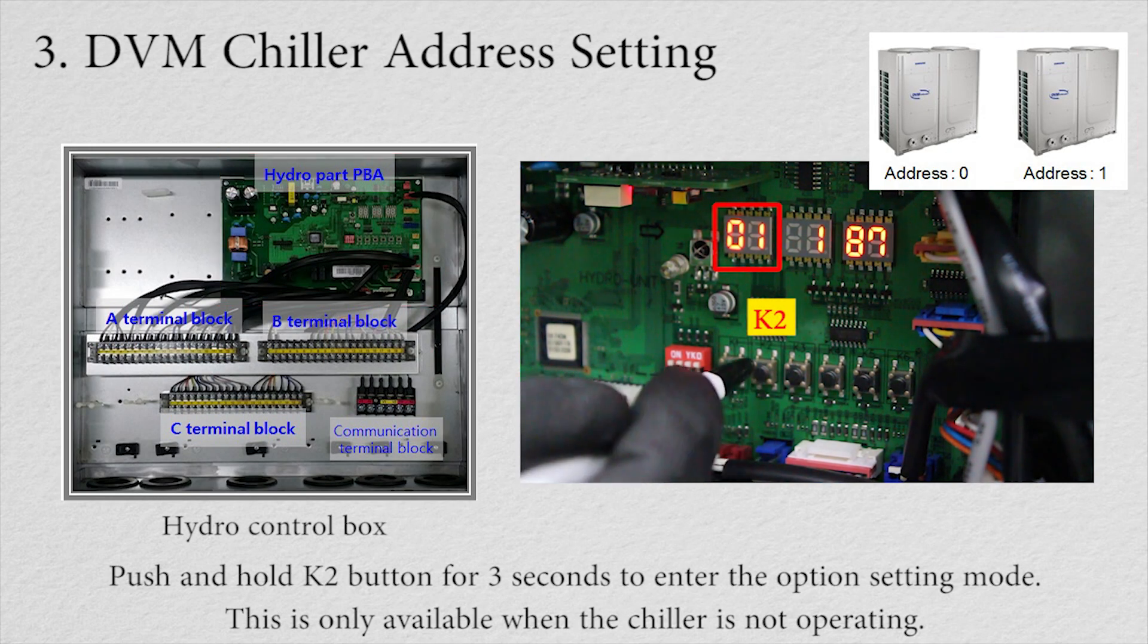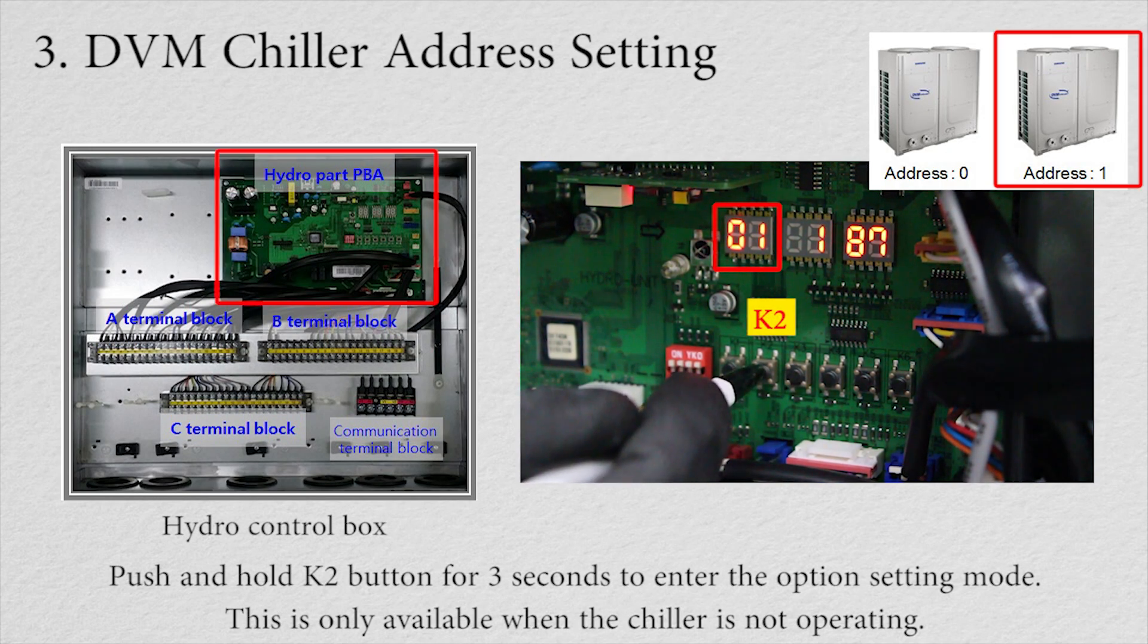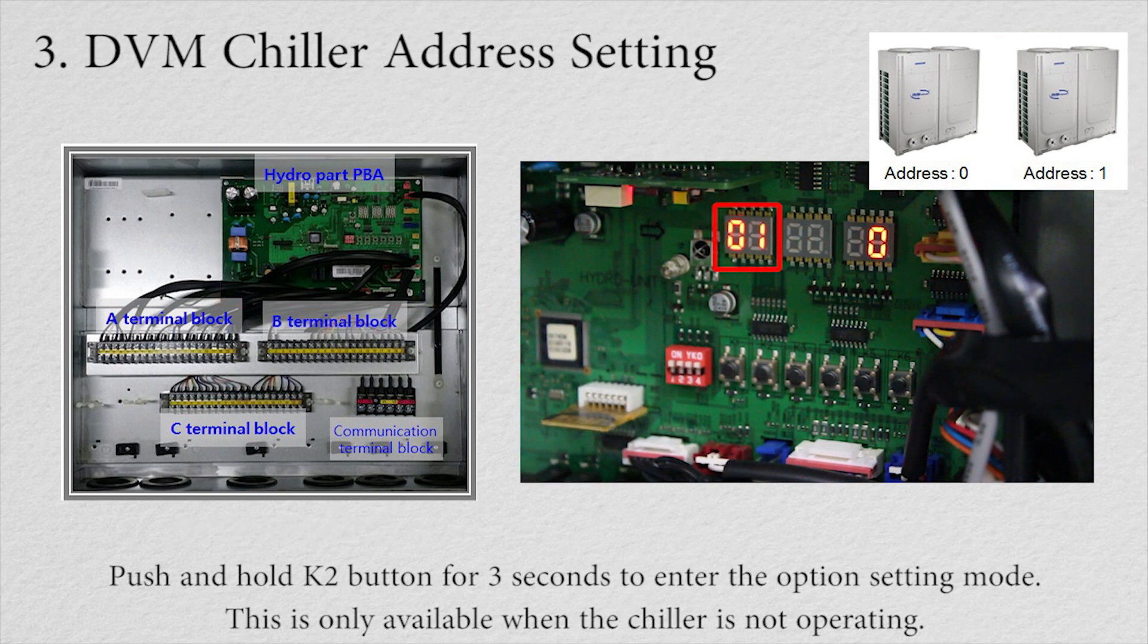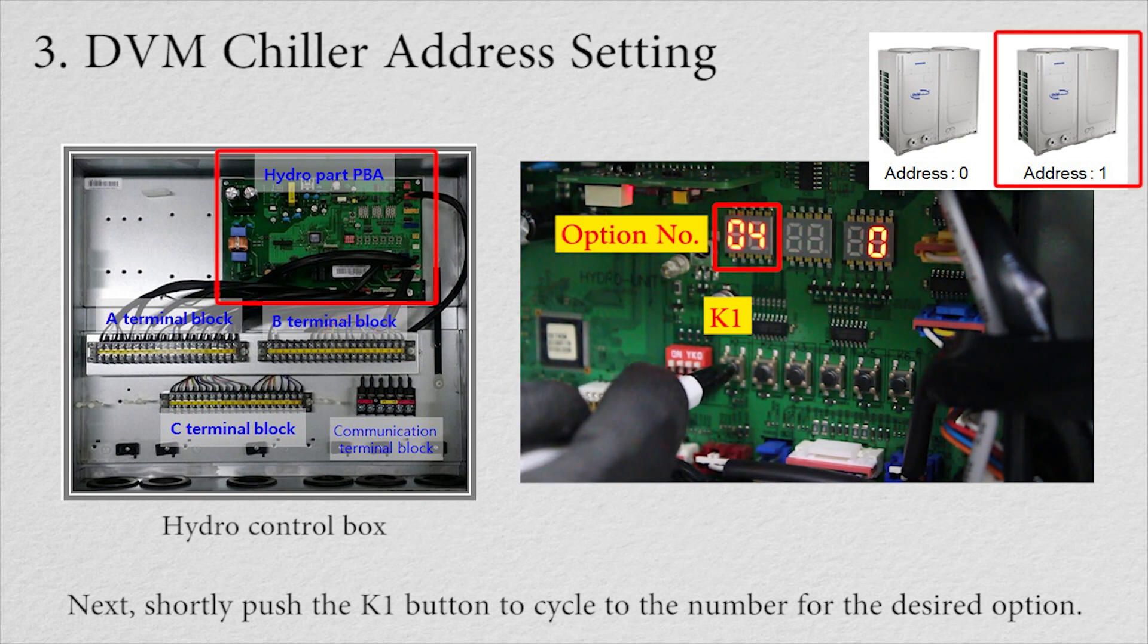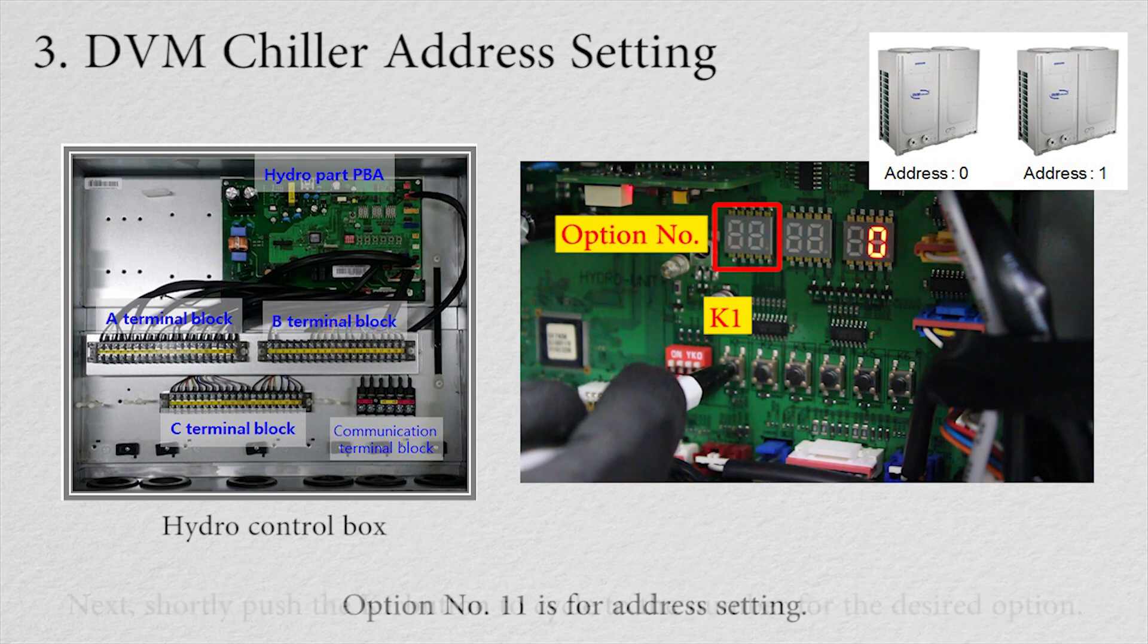Push and hold K2 button for 3 seconds to enter the option setting mode. This is only available when the chiller is not operating. Next, shortly push the K1 button to cycle to the number for the desired option. Option number 11 is for address setting.